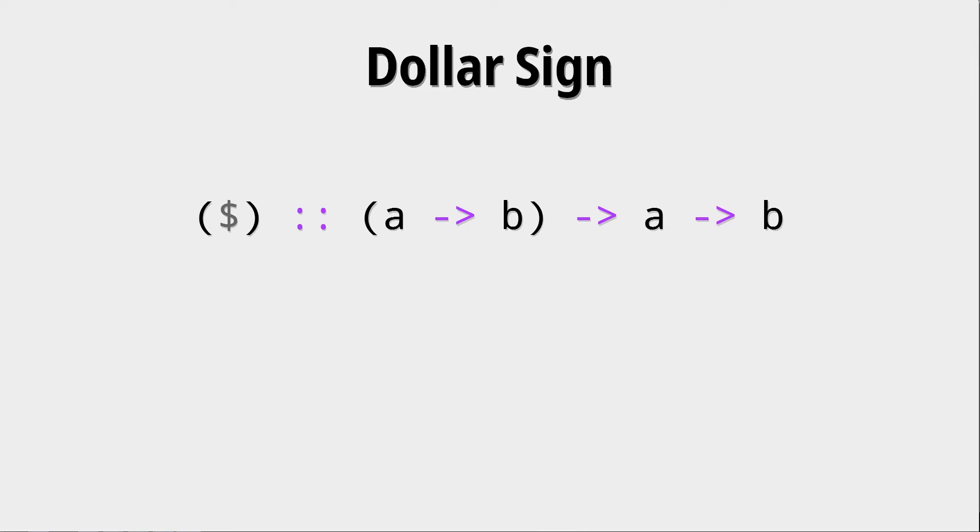Another, not that important, but also somewhat important operator, which is not really used for composition, but just for tidier syntax, is the dollar sign. It is basically the same function that we had right when we talked about higher order functions. There we had this app function that took a function and its value and then just applied the function to the value. That's exactly what the dollar sign is doing. But it can be written, and that's the important thing, it can be written in a cleaner and nicer way.